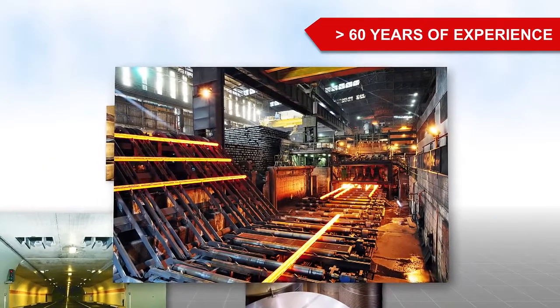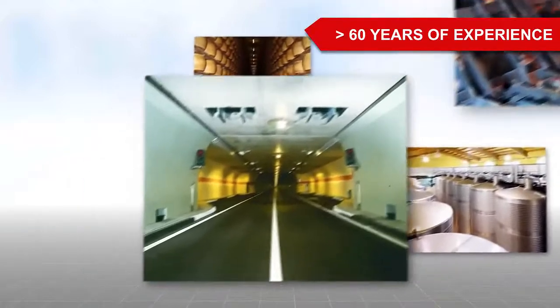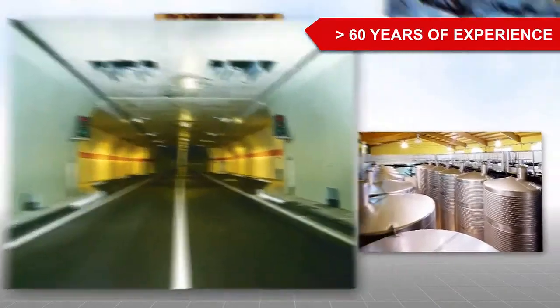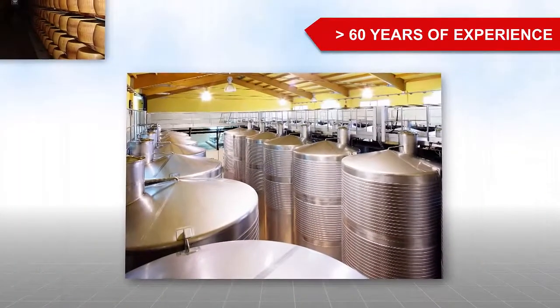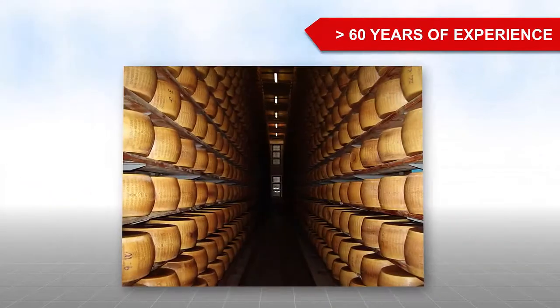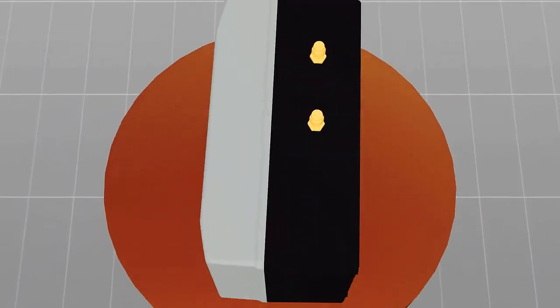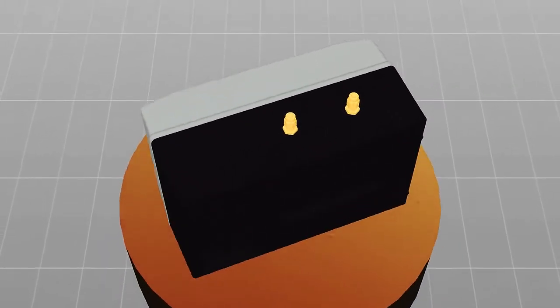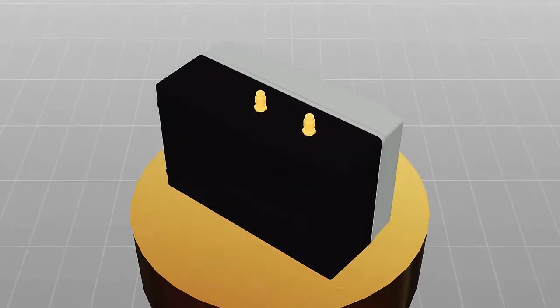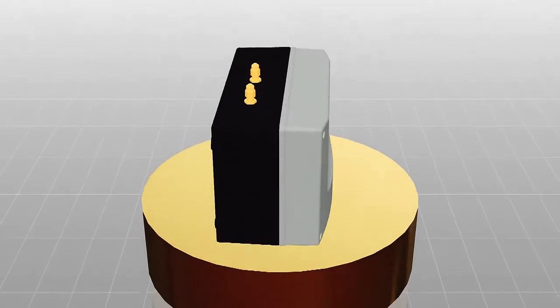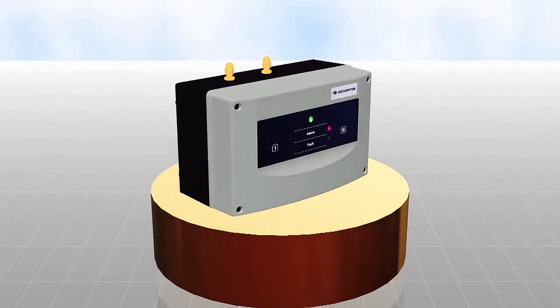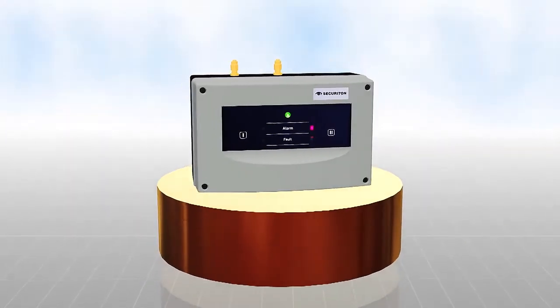For over 60 years, Securiton has focused on fire detection in areas where conventional fire detectors reach their physical limits. This is where the new Securisense ADW535 line type heat detector comes into its own. Fire detection in areas where everything else fails has always been Securiton's specialty.